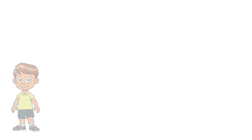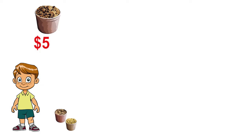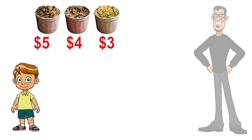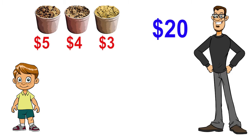Josh is selling cookie dough to raise money for his school. He is selling three different kinds for different prices. The chocolate chip is $5 per tub, oatmeal raisin is $4 per tub, and peanut butter is $3 per tub. Pedro spent $20 purchasing oatmeal raisin cookie dough. How many tubs did he purchase?